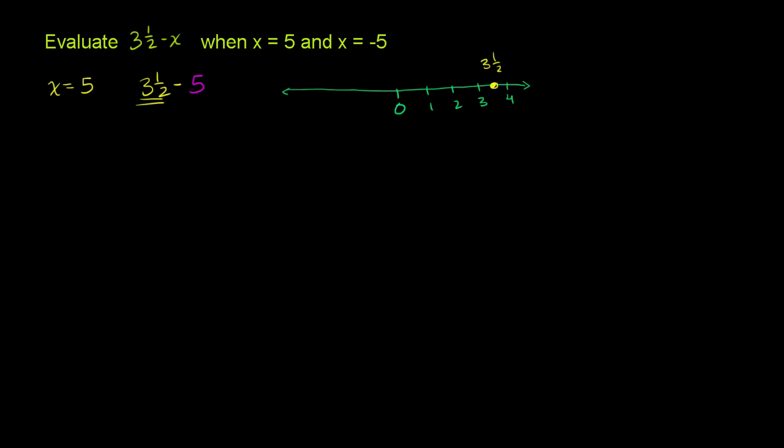I'm going to subtract 5. And before I do that, let me draw some spaces below 0, because this is obviously a larger number than that, so we're going to drop below 0. We're 3½ to the right, and we're going to go 5 to the left. So we're going to end up to the left of 0. Let me do negative 1, negative 2, and negative 3.